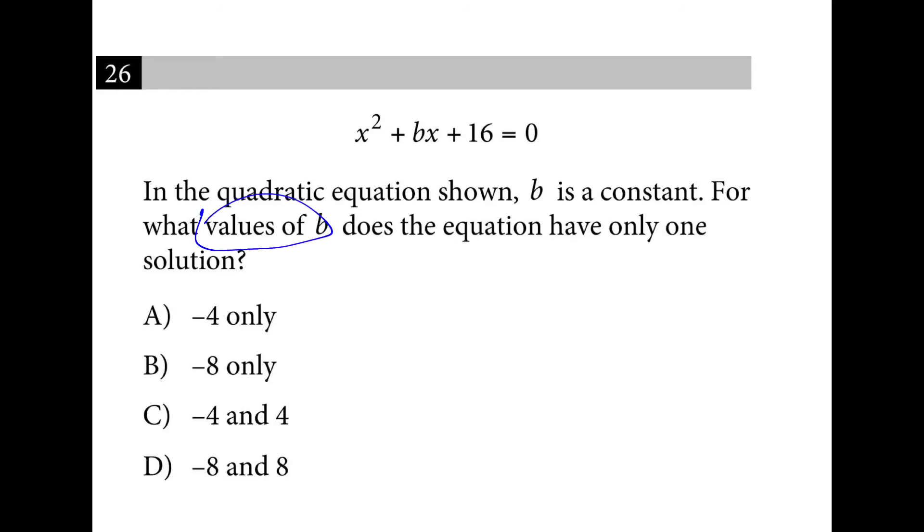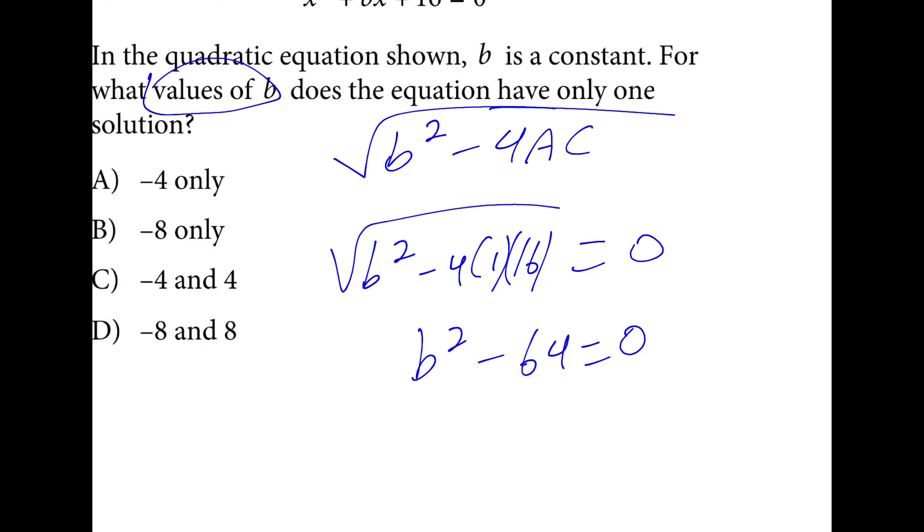For what value of b do we only have one solution? So a is one, b is b, and c is 16. I'm going to use the discriminant part of the quadratic formula and plug in these values. So b squared minus four times one times sixteen equals zero. B squared minus sixty-four is zero. B squared is sixty-four. B is eight.